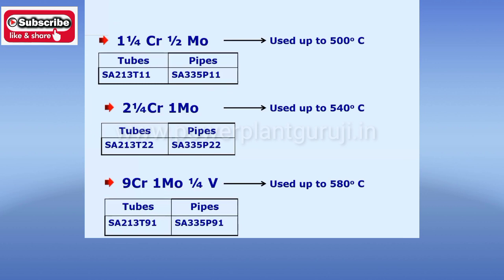Up to 600 degrees centigrade we can use T91, but if the metal temperature is expected to be 600 degrees, it is safer to use a higher metallurgy. The total alloying percentage is actually exceeding 10% — it is 10.25%. Still, this metallurgy is considered to be a low alloy steel (LAS).